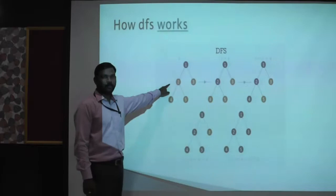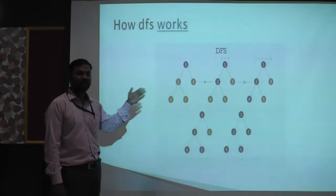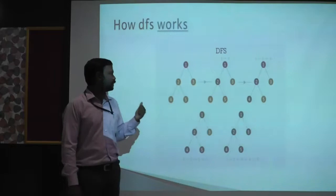From the source node, it reaches node two. After two, it will proceed to the next level. Because it is a depth-first search, it will iterate node-wise, not level-wise. So after processing node one, it goes to two. Without processing three, it goes to the next child. Again, there are two options, four and five, out of which it chooses four.